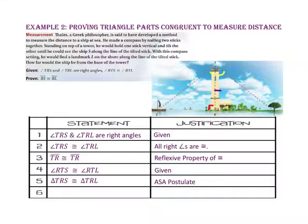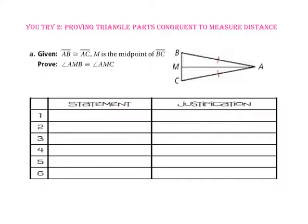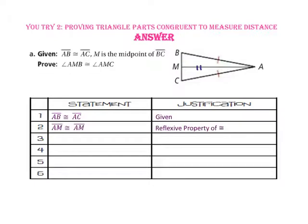Since all corresponding parts of congruent triangles are congruent, side RS is congruent to side RL. Pause the video and do U-try number 2. We want to prove that angle AMB is congruent to angle AMC. Let's start with the given information that side AB is congruent to side AC. Next, let's use the reflexive property of congruence to state that side AM is congruent to side AM.